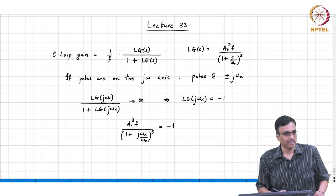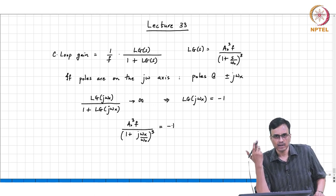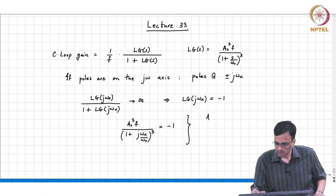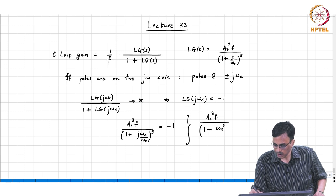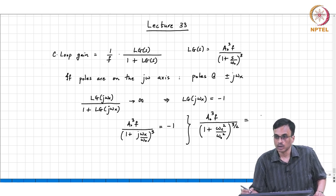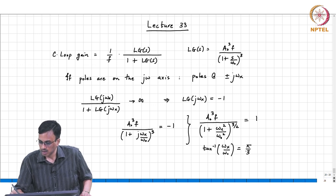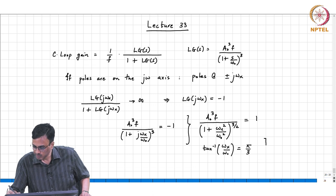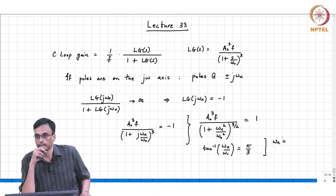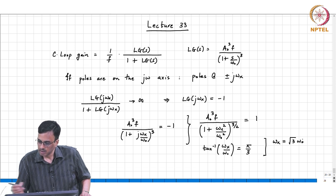Looking at the loop gain function: a₀³f / (1 + jωx/ω₀)³ must equal −1. Since it is a complex equation, we get two equations — magnitude and phase. The magnitude equation gives a₀³f / (1 + ωx²/ω₀²)^(3/2) = 1, and the phase equation gives tan⁻¹(ωx/ω₀) = 60°, which means ωx = √3 · ω₀.